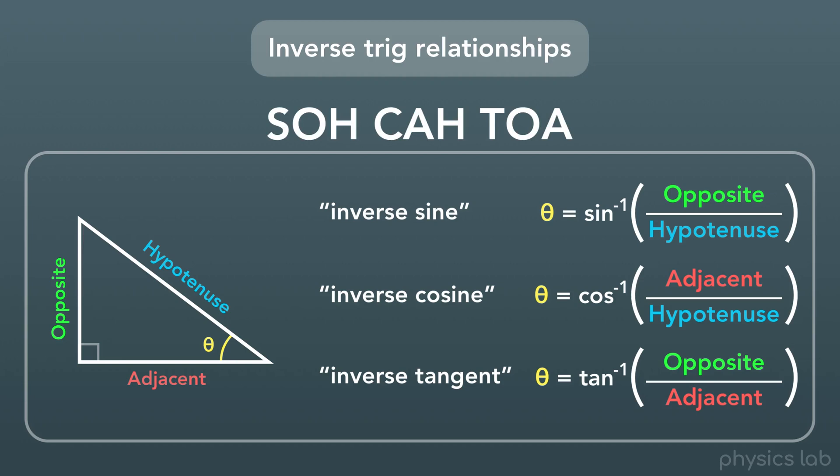Note that SOH CAH TOA still works here, because each function still uses the same side lengths. One way to write these functions is as we see here. For example, we call the first one inverse sine, and write the function as sin with a negative one above it. This is not actually a real exponent like we use for doing math, this is just the way it's written.